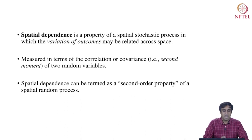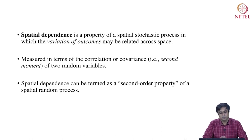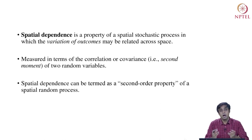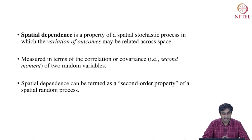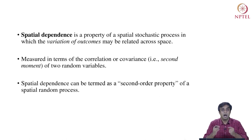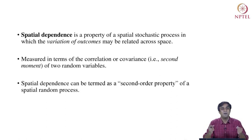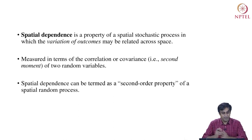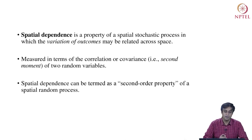The second tool we have is called spatial dependence. Spatial dependence is a property of spatial stochastic processes in which the variation of outcomes may be related across space. It is measured in terms of correlation or covariance of two random variables whose locations are identified in space. Since it depends on the second moment of these random variables — the covariance metric — spatial dependence is also sometimes termed as the second-order property of a spatial random process.